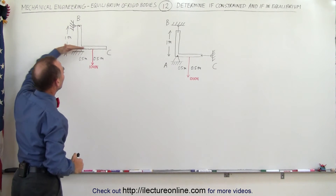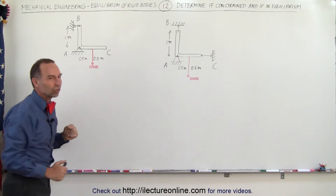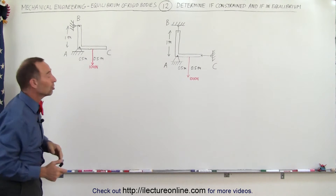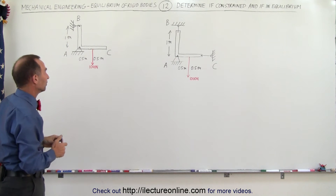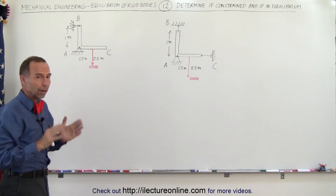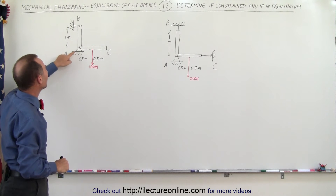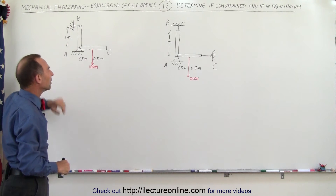That means this point has to compensate for it and pull or push in the opposite direction. So it looks like everything is properly constrained, and we can indeed find the forces at A and B.